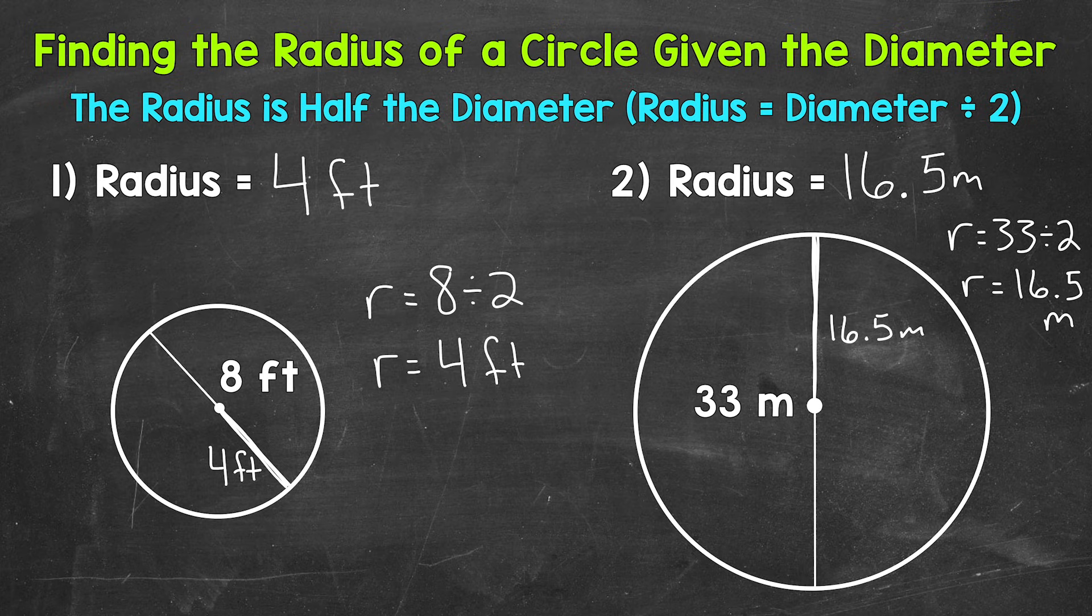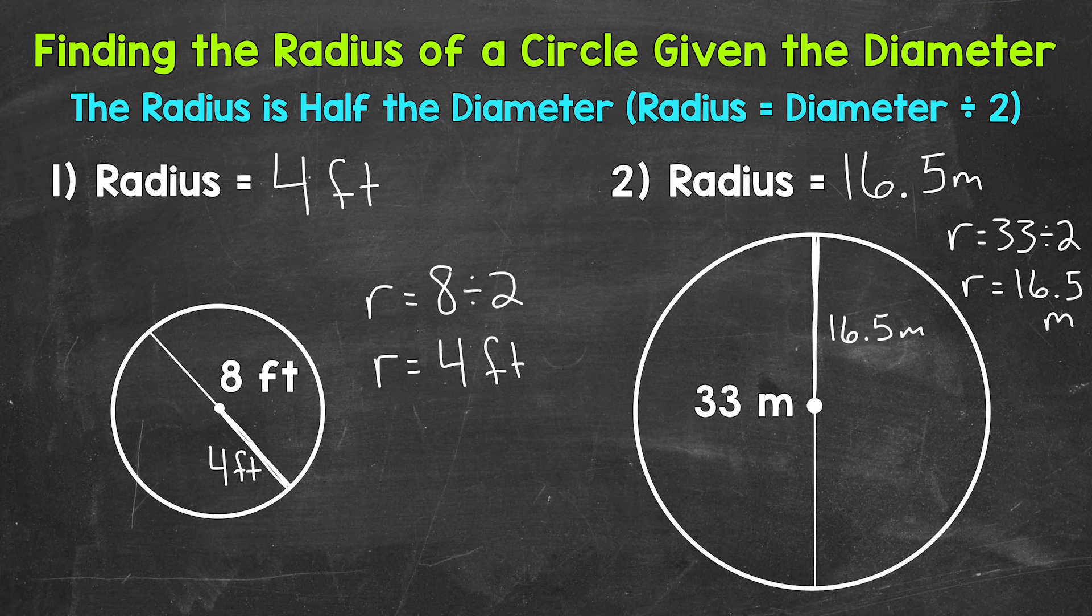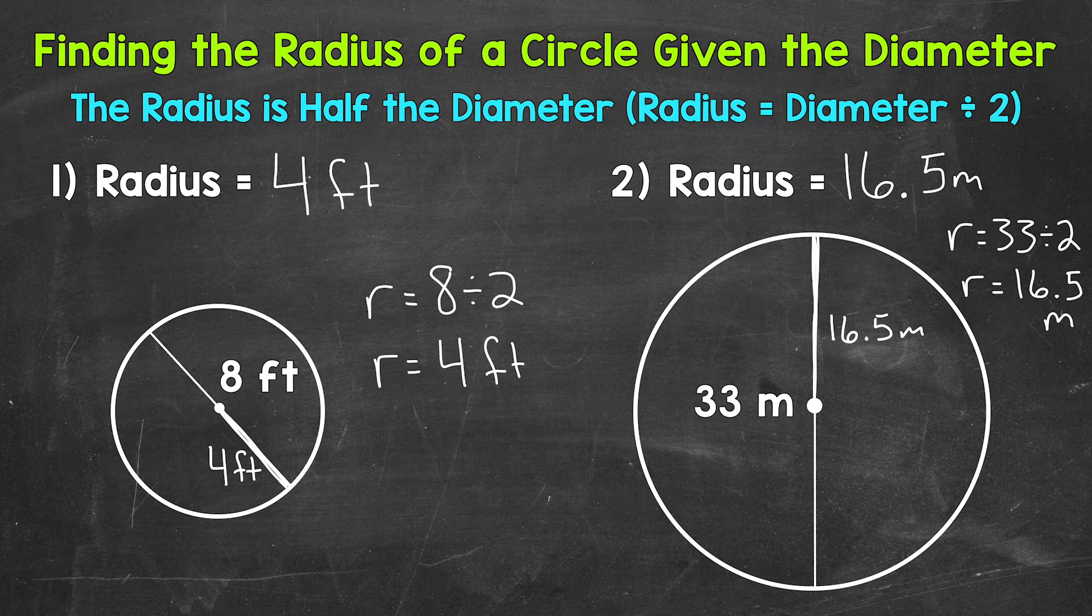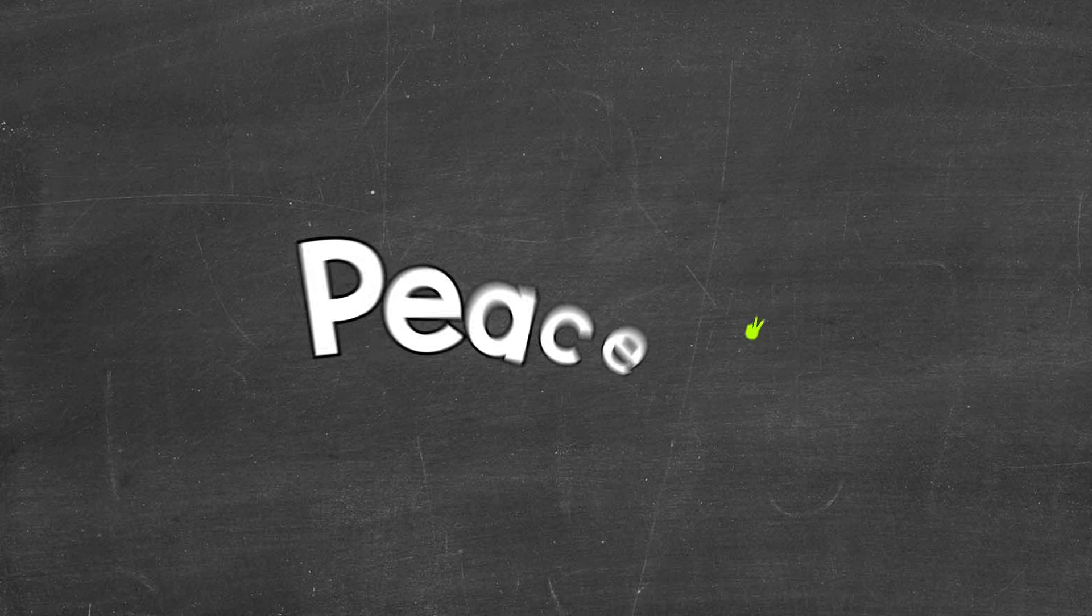So there you have it. There's how you find the radius of a circle given the diameter. Radius equals the diameter divided by two. I hope that helped. Thanks so much for watching. Until next time, peace.